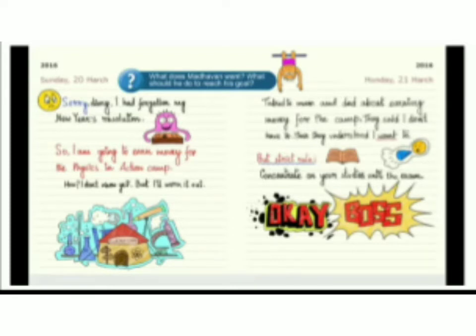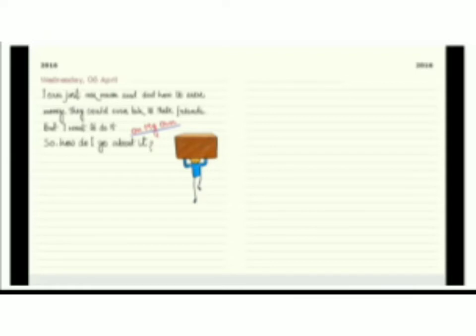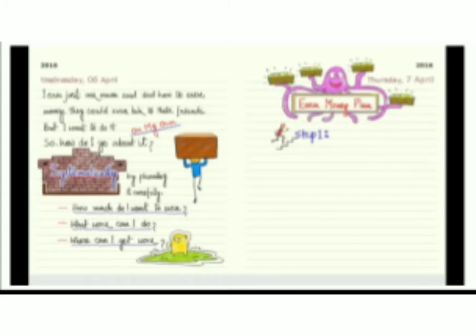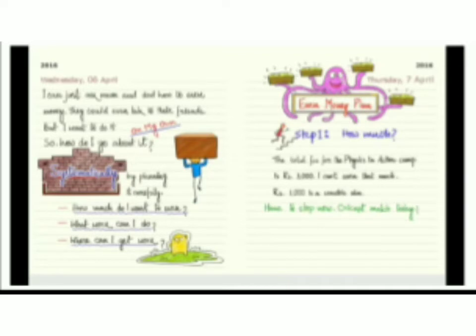Wednesday, 6th April. I can just ask Mom and Dad how to earn money. They could even talk to their friends. But I want to do it on my own. So how do I go about it? Systematically, by planning it carefully. How much do I want to earn? What work can I do? Where can I get work? Thursday, 7th April. Earn Money Plan, Step 1: How much? The total fee for the Physics in Action Camp is Rupees 3000. I can't earn that much. Rupees 1000 is a sensible aim. Have to stop now, cricket match today.